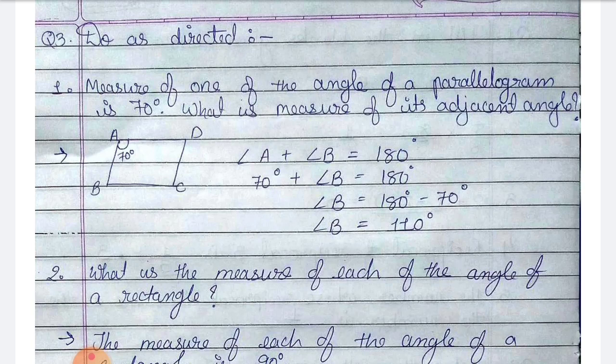So 70 degrees plus angle B is equal to 180 degrees. Angle B is equal to 180 minus 70, which is 110 degrees. So the adjacent angle's measure is 110 degrees.